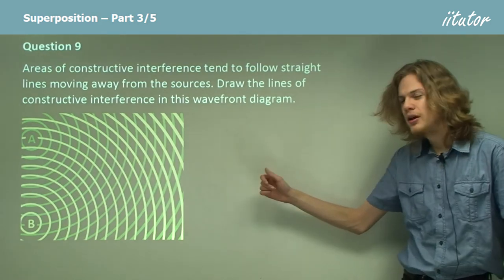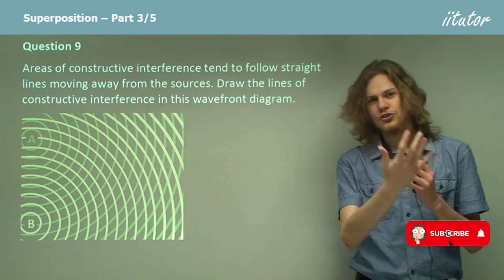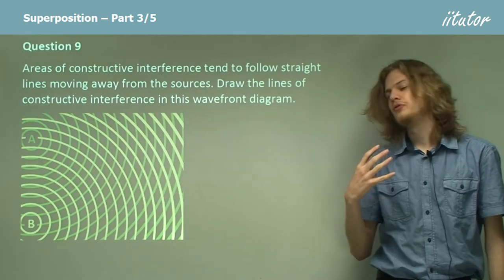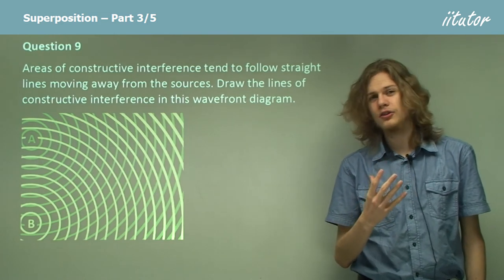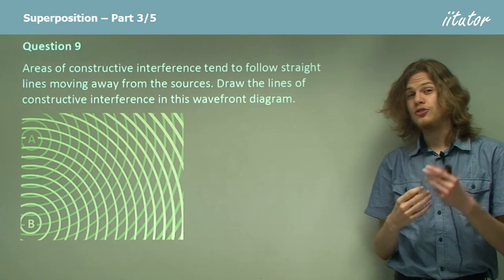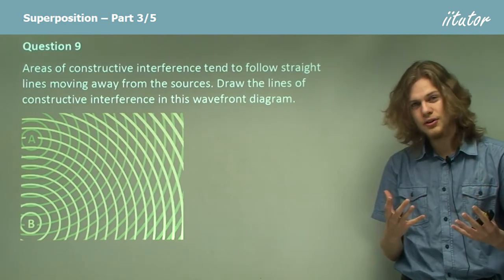In a wave front diagram the lines represent the crests moving away. So the green lines are the crests moving away from A and the yellow lines are the crests moving away from B. When these two crests overlap we'll get constructive interference.